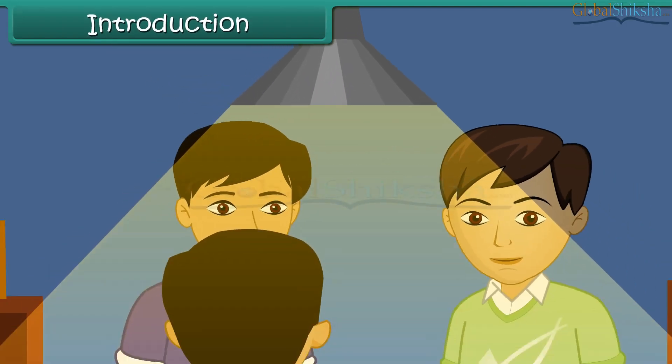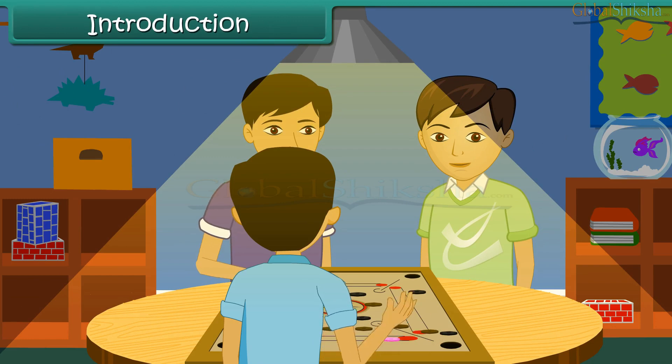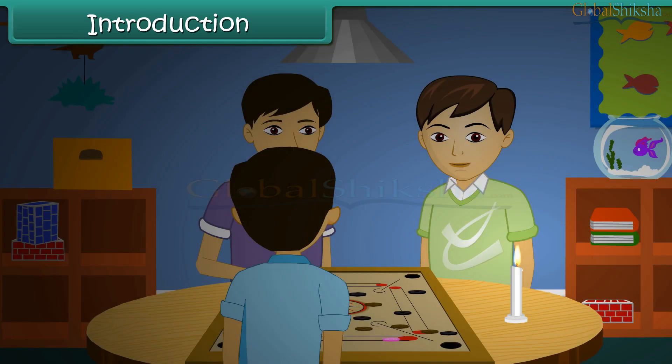It is summer vacations. Friends have gathered at Mohit's place to play a game of Karan. During the game, the electricity went out. Mohit went and brought a burning candle to finish off the game.